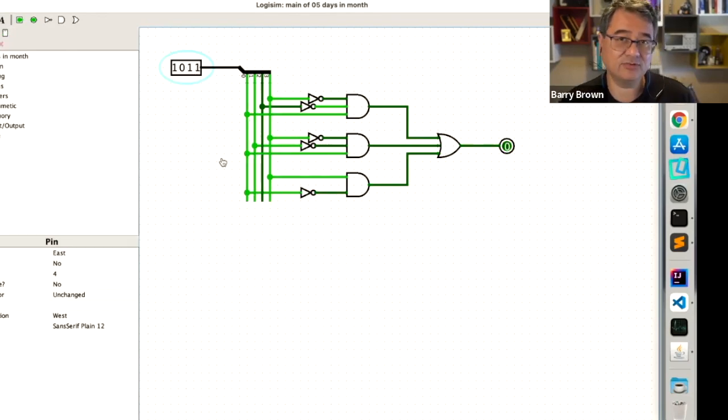So what happens with the other months, the non-existent months? Well, here is month number 12, which is the one after December. It ended up being on. Here's 13, it's off. Here's 14, it's on. And then for 15, it's off. But remember, we don't care. We don't care what the output is going to be, because those months just simply don't exist.